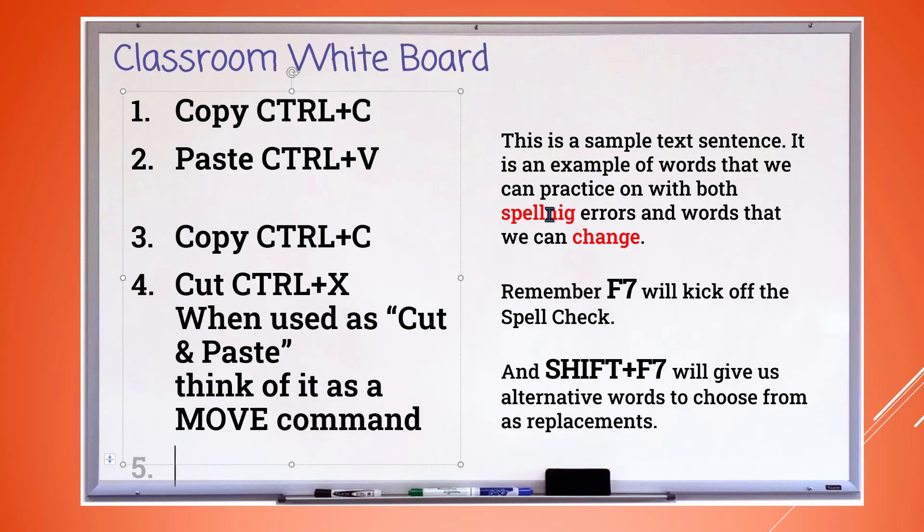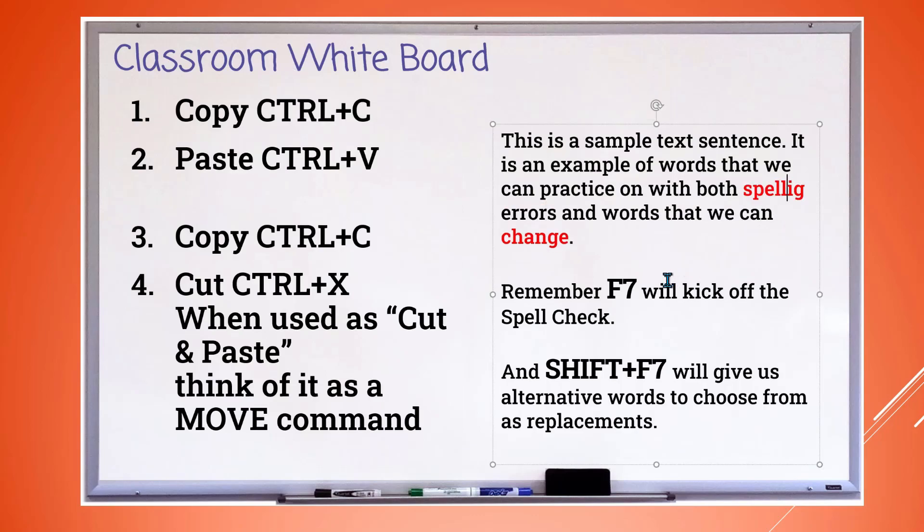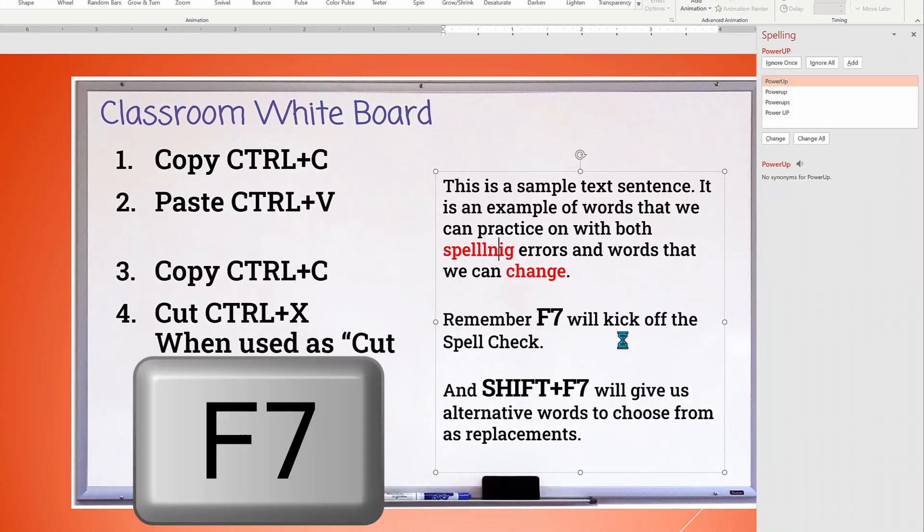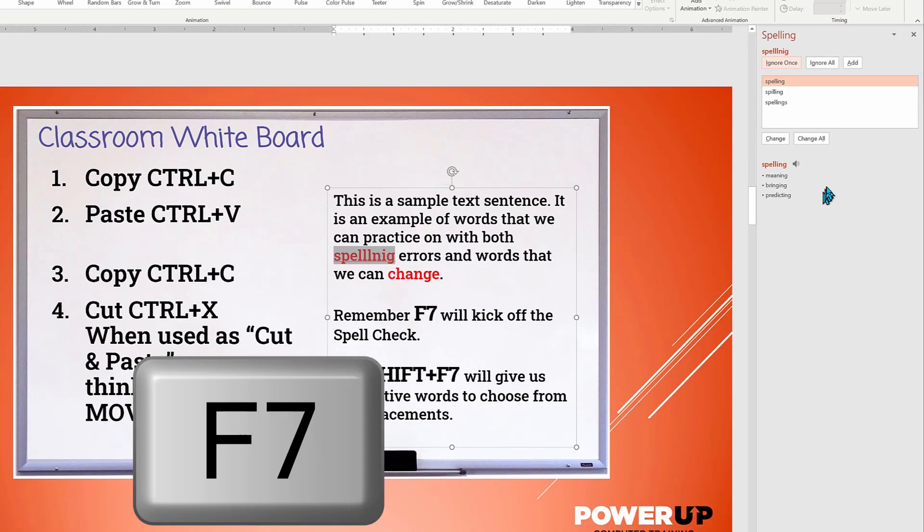Let's hit the next two quickly as the F7 function key will launch the spell check tool for whichever Microsoft program you're running. Let me introduce a spelling error, and then we'll run the F7 for spell checker and see the corrected word, which we can then replace.